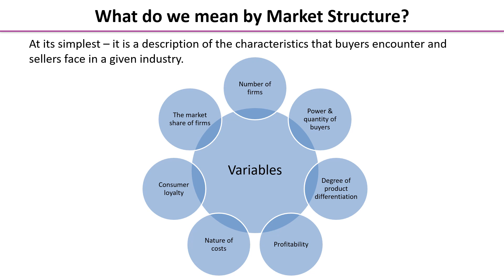The second feature is the power and quantity of buyers — where does demand come from? Is there a mass market with lots of people wanting similar things, or a niche market with very few people seeking a particular product? Third is the degree of product differentiation: how much choice do buyers have? Is there one type of product that's very similar regardless of producer, or many variations?